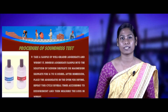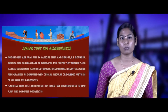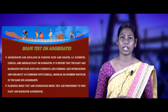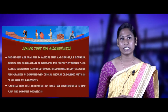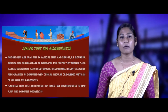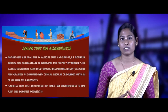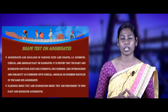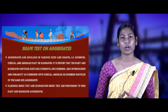Aggregates are available in various sizes and shapes: cubical, angular, flaky, elongated, and rounded. Flaky and elongated aggregates have less strength, less durability, less interlocking, and less bonding compared to cubical, angular, and rounded aggregates. Flaky aggregates are too thin compared to their average dimension, and elongated aggregates are too long compared to their average dimension. Elongation index test and flakiness index test are performed to find out the flaky and elongated aggregates.